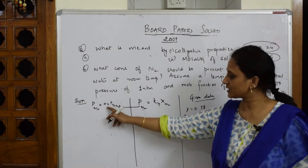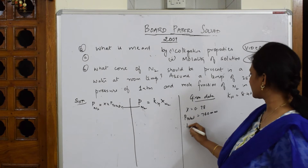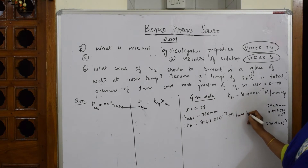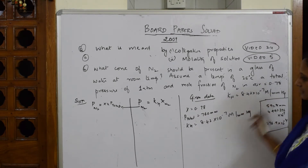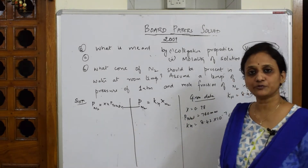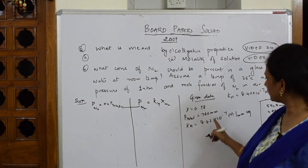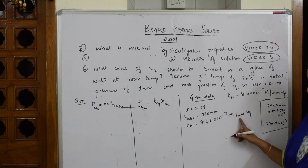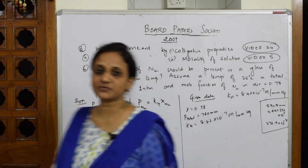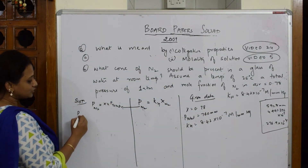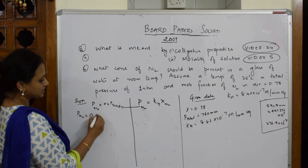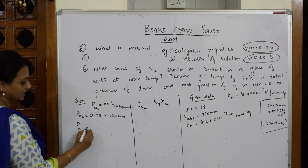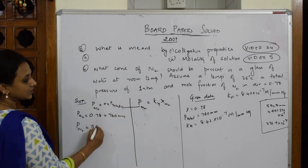Now I can calculate PN₂ = 0.78 × 760 mm = 592.8 mm. KH is given as 8.42 × 10⁻⁷ M per mm of mercury. I have this data as well. So I can easily find X of N₂. The value 760 mm is important here because KH is given in M per mm of mercury.